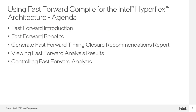To do this, we will start with an introduction to the Fast Forward Analysis tool, describing what it does and the benefits of using it. We will then cover how to generate the Fast Forward Timing Closure Recommendations reports and how to read these reports to get information on potential design modifications. Lastly, we will talk about some ways in which you can fine tune the Fast Forward Analysis to make it more useful to you.